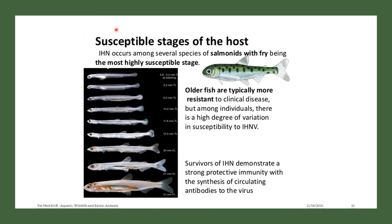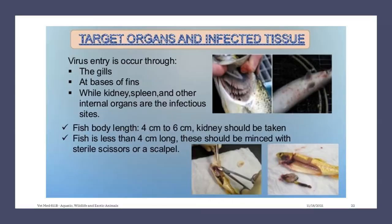What are the susceptible stages of the host? IHN occurs among several species of salmonids, with fry being the most highly susceptible stage. Older fish are typically more resistant to clinical disease, but among individuals there is a high degree of variation in susceptibility. Survivors of IHN demonstrate a strong protective immunity and the synthesis of circulating antibodies to the virus. The virus entry occurs through the gills at the base of the fins, while the kidney, spleen, and other internal organs are the infectious sites.